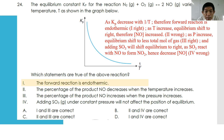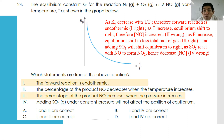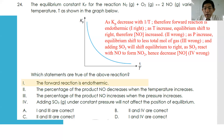Statement three: percentage of NO increases when pressure increases — wrong, because both sides have the same number of gas molecules, so percentage of NO remains constant. Statement four: adding SO₃ under constant pressure will not affect the equilibrium — also wrong. Only statement one is correct.